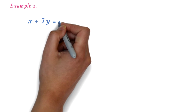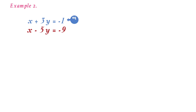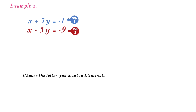We want to solve the simultaneous equations: x plus 3y equals negative 1, and x minus 5y equals negative 9. Let's call these equation 1 and equation 2. The first step is to choose the letter you want to eliminate. I will choose x. Next, you want to make the coefficient the same. The coefficient of x is already the same in both equations, so there's nothing to do in this step. Remember, when you have no coefficient written, the coefficient is 1.